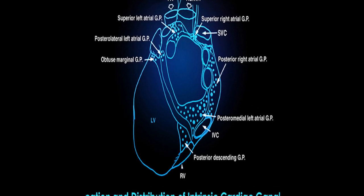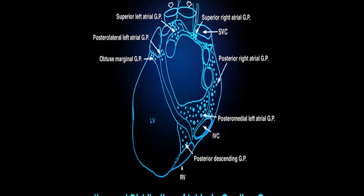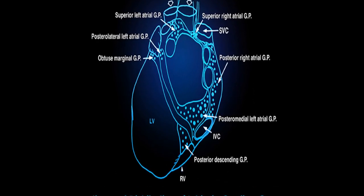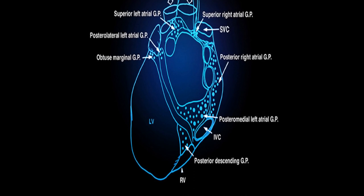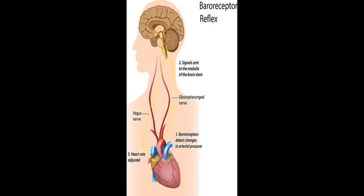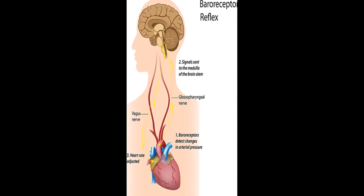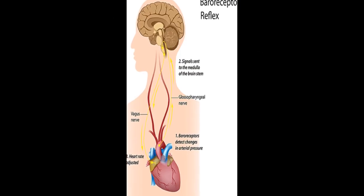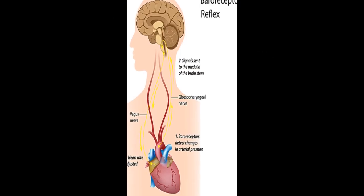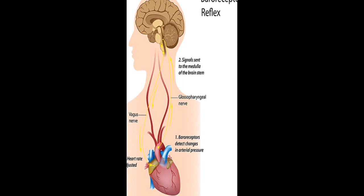This article reviews neuroregulation of the heart and its basic anatomy, including the cardiac cycle and sinoatrial and atrioventricular pacemakers.